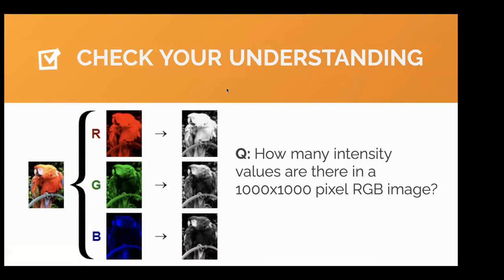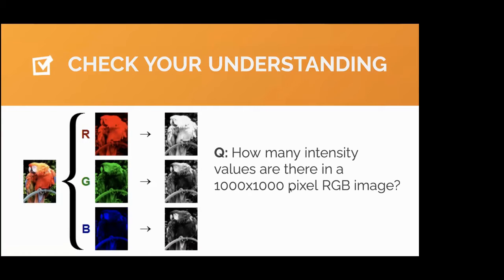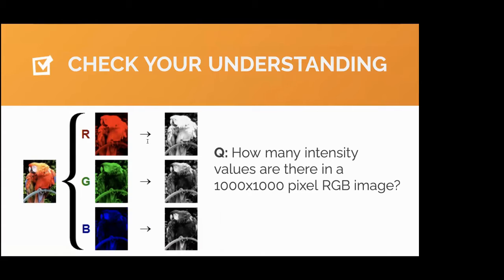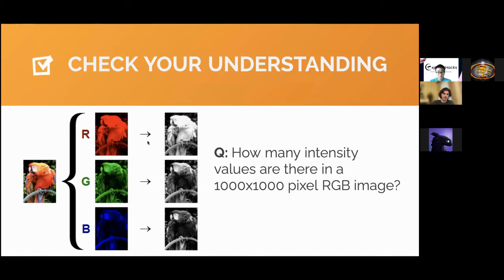Quick understanding check: how many intensity values are in a 1000 by 1000 RGB image? As correctly answered in the chat — a thousand times a thousand times three — that would be a total of three million intensity values.